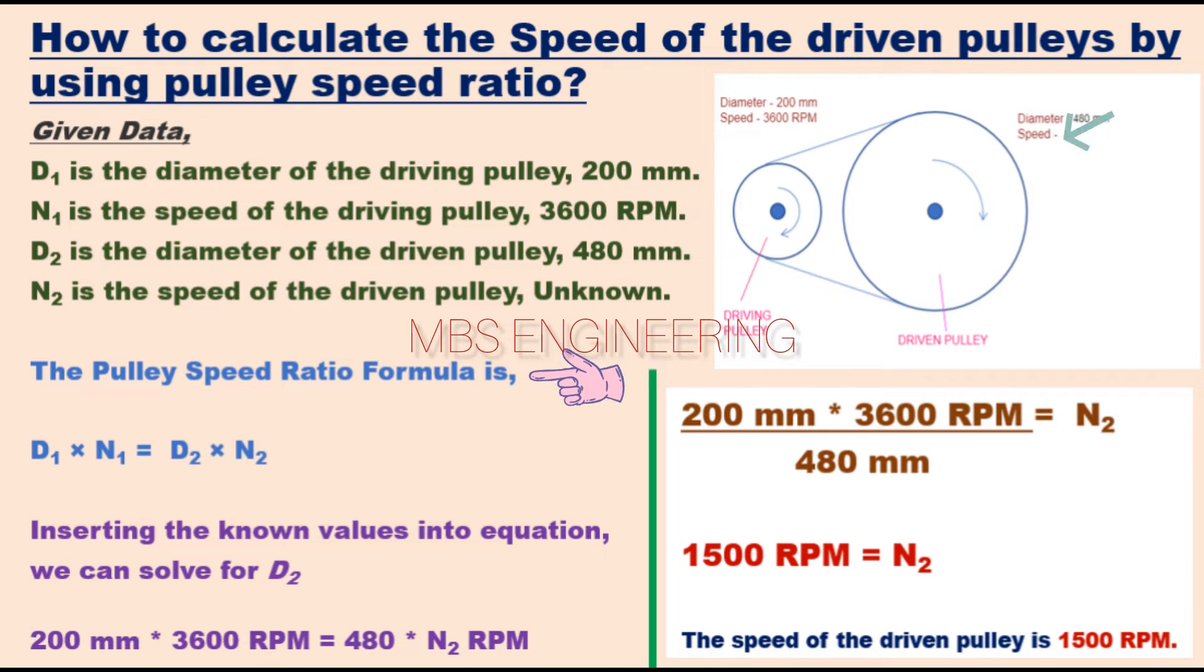Now, let's use the pulley speed ratio formula to calculate N2. D1 multiplied by N1 is equal to D2 multiplied by N2.